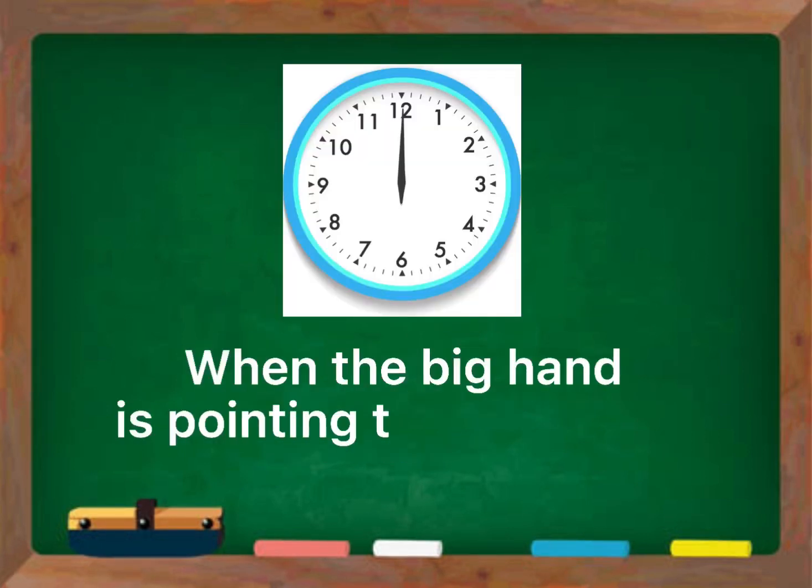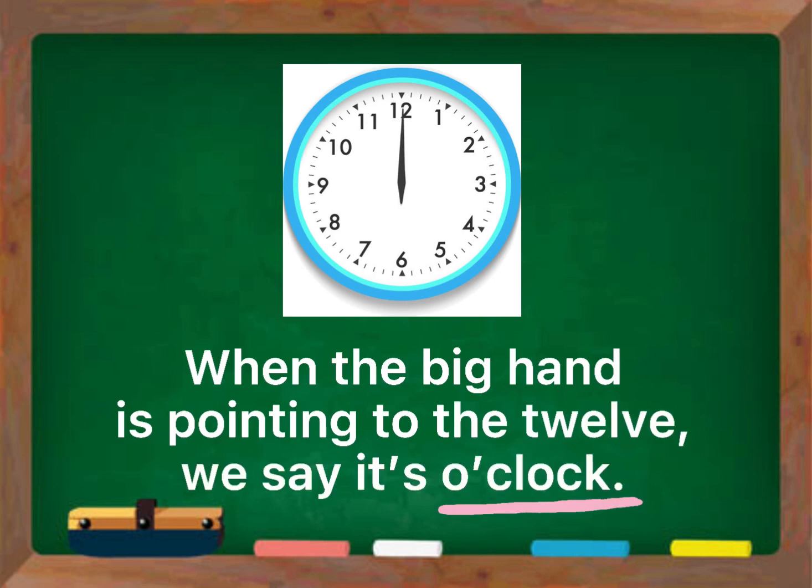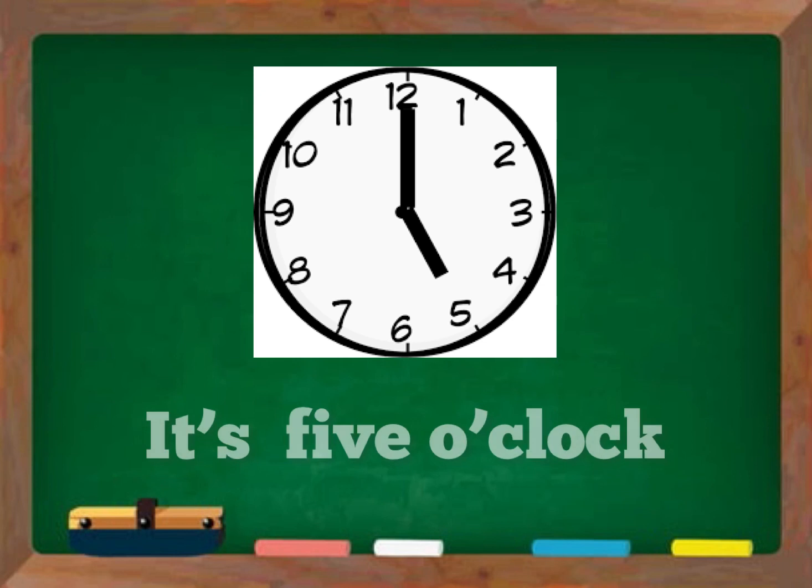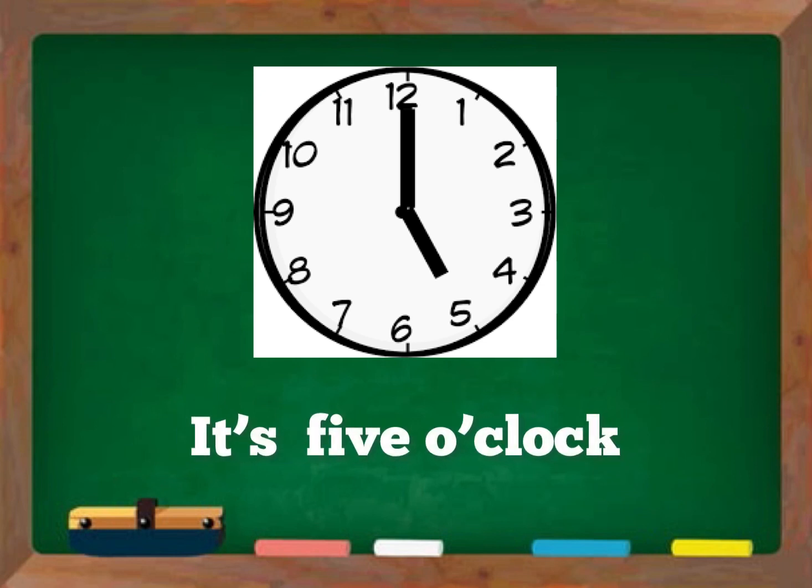When the big hand is pointing to the 12, we say it's o'clock. For example, what's the time now? Excellent, it's five o'clock.